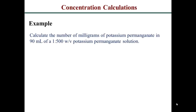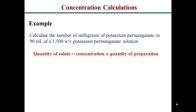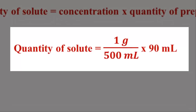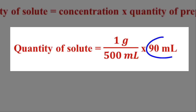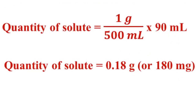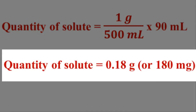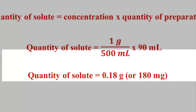Let's look at an example where we apply this CQ approach. Calculate the amount in milligrams of potassium permanganate in 90 ml. Your 90 ml is your total preparation and your concentration is 1 to 500. So you have 1 gram in 500 ml; multiply that by 90 ml, and that gives you 0.18 grams. So in this 90 ml you have 180 milligrams.